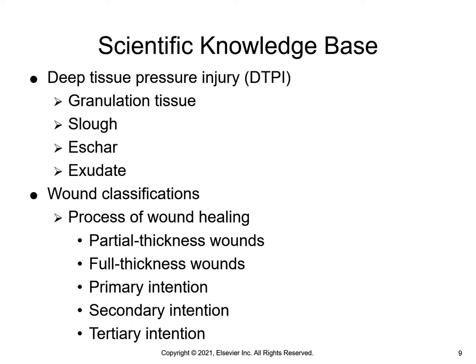A wound is a disruption of the integrity and functioning of tissues within the body. Wounds heal by various types of intention. Primary intention is a wound that is closed — think of a surgical incision sutured or stapled. This healing occurs by epithelialization and heals quickly with minimal scar formation. For secondary intention, the wound edges are not approximated; surgical wounds with tissue loss or contamination are an example. The wound heals by granulation tissue formation, wound contraction, and epithelialization.